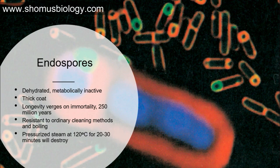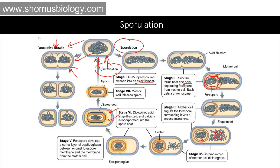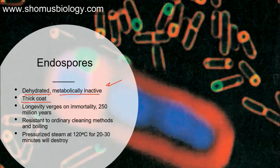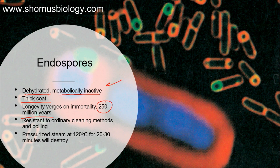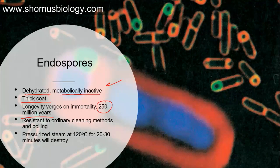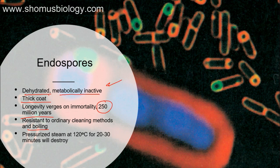The endospores are simply dehydrated, metabolically inactive components of the mother cell. They have a very thick coat made up of dipicolinic acid and calcium deposited on top of a bilayer of cell membrane. They have remarkable longevity and sometimes near-immortality — sometimes up to 250 million years can be the survival time for bacterial spores, which is incredible. They are resistant to ordinary cleaning methods and boiling; even at very high temperatures, pasteurization cannot kill those spores, and methods like moist heat and dry heat are also not going to kill the spores.